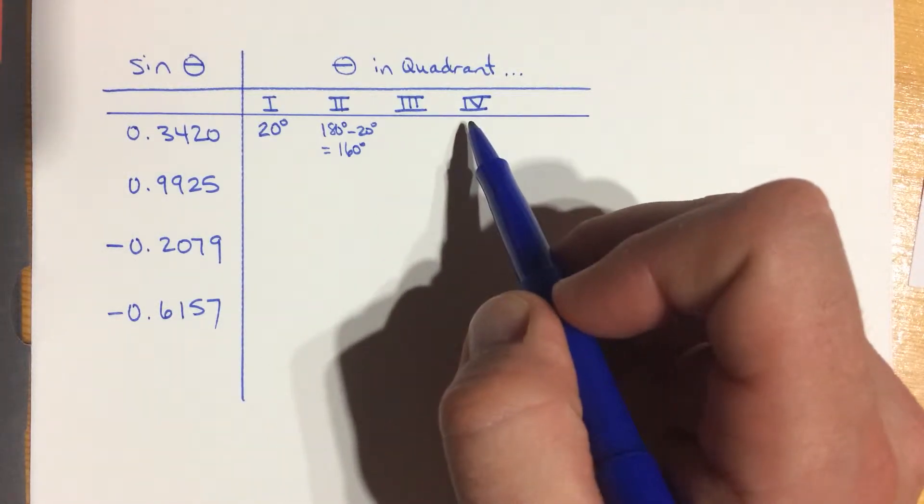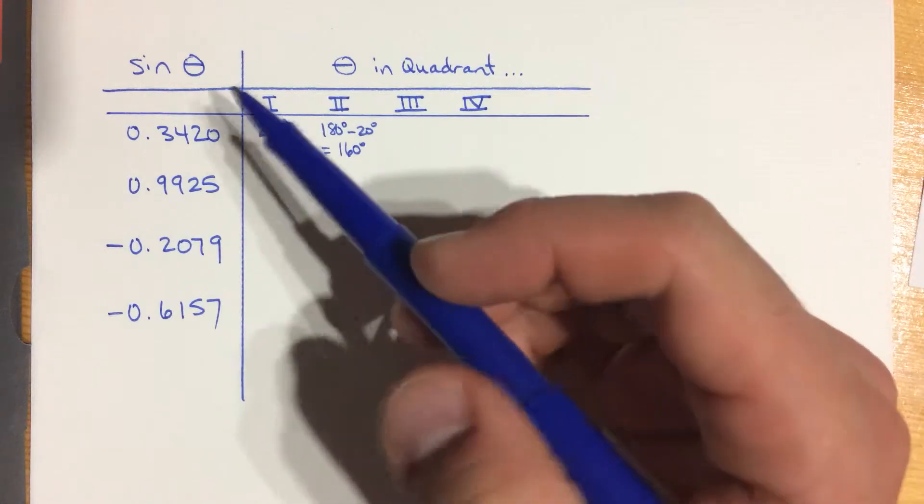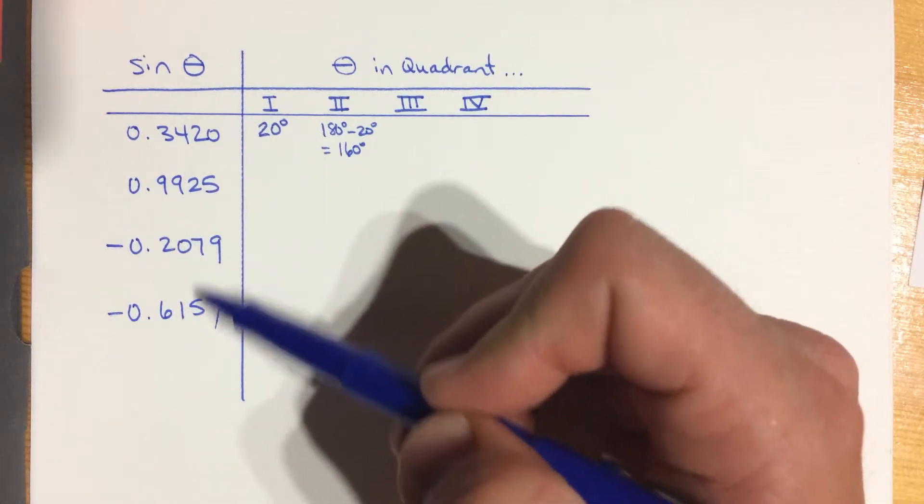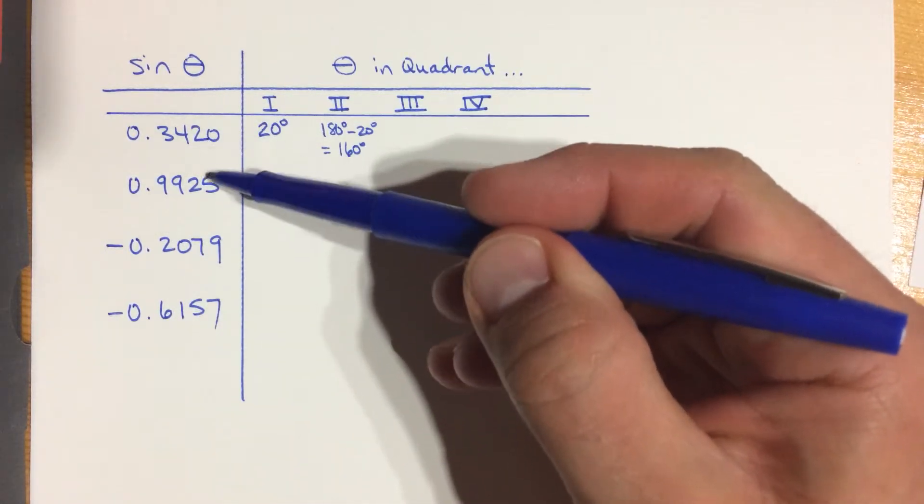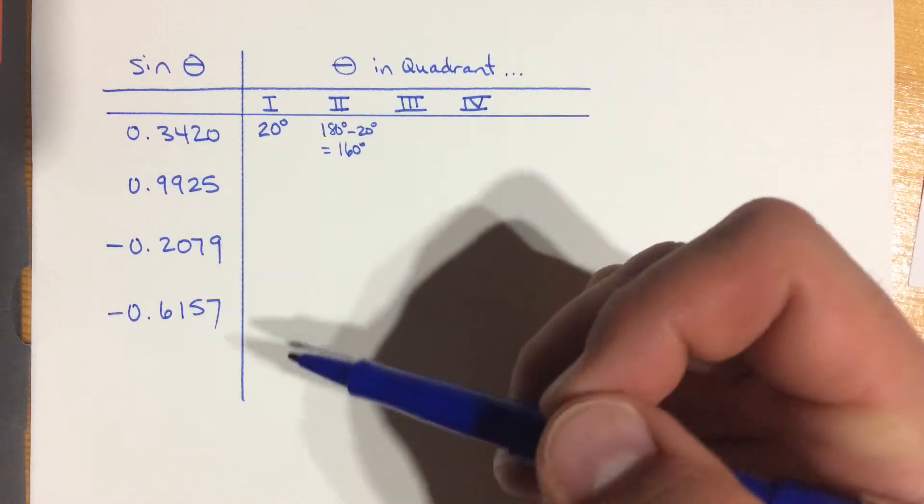It can't be in the third or fourth quadrant because the sine function will give us a negative number like these two down here. So these ones are going to be in the first two quadrants, and these two are going to be in the third and fourth quadrants.